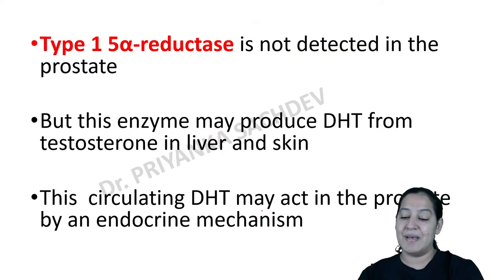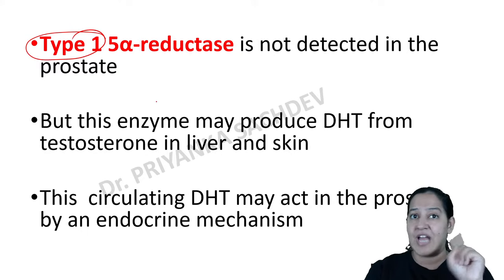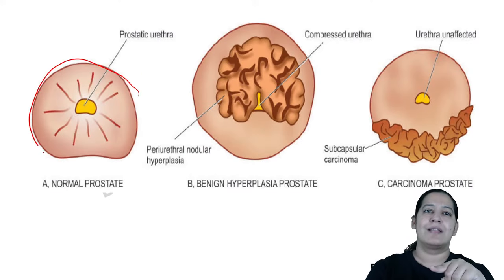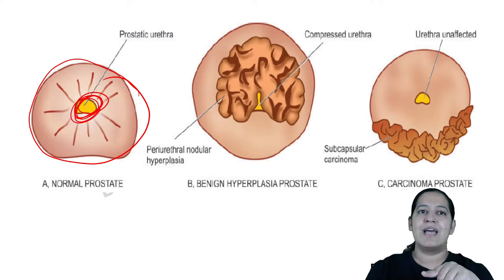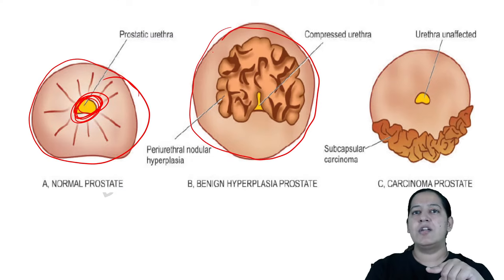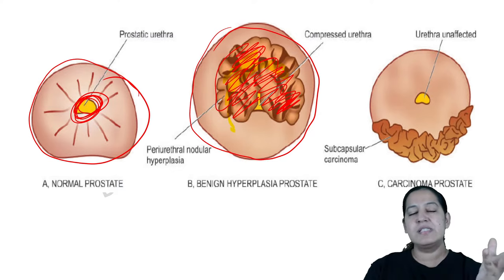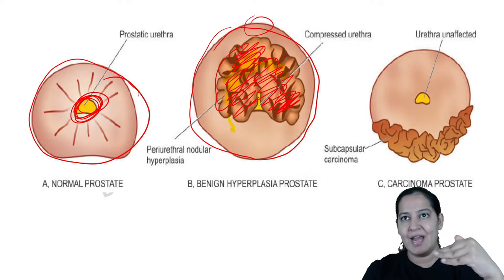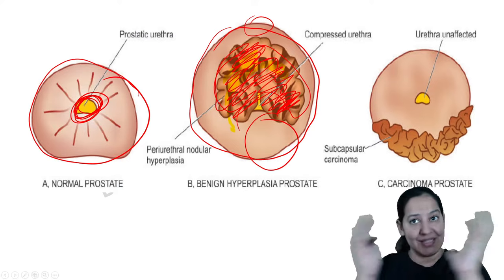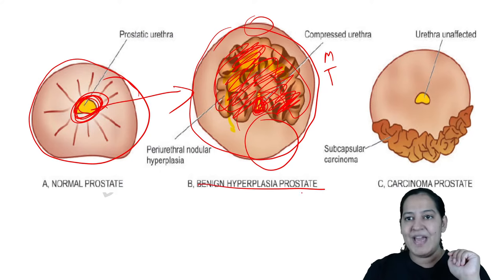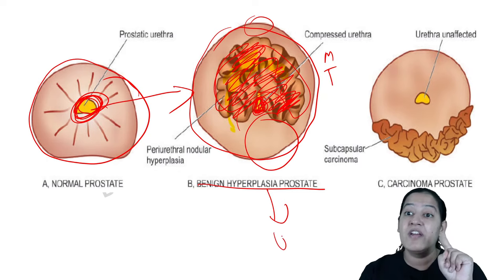Gross appearance: compare normal prostate (urethra visible in center) with BPH — you can see a tumor in the middle lobe, transitional zone, compressing the urethra. The patient presents with urinary obstruction because the tumor is close to the urethra. Typically the patient is over 50 years old. He complains: sensation of full bladder, dribbling of urine — urine comes drop by drop, not in a flow — and inability to completely empty the bladder even after voiding.